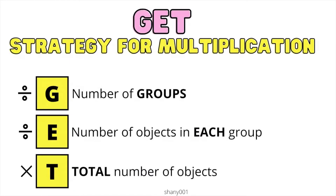When we multiply or divide, we will be using the GET strategy. G stands for the number of groups. E stands for the number of objects in each group. T stands for the total number of objects. Since we're focusing on multiplication and we need to find the total, we know we have to multiply.